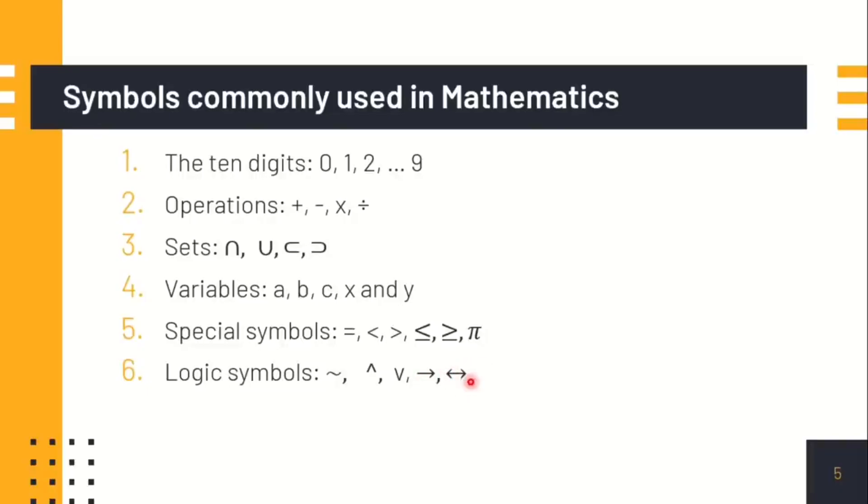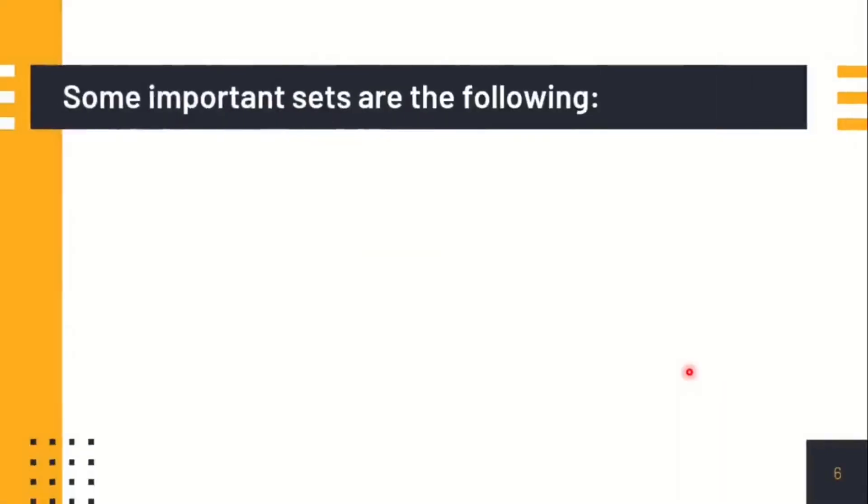Next are the set notation. We have the capital N stands for the natural numbers, the capital W for the whole numbers, the Z for integers, Q for rational numbers, R for real numbers, and the C for complex numbers.